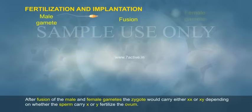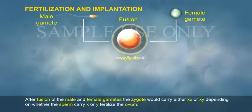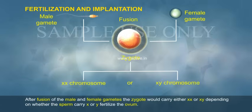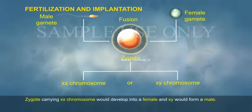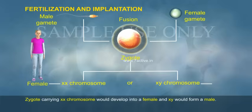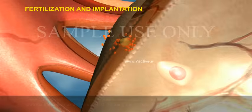After fusion of the male and female gametes, the zygote would carry either XX or XY depending on whether the sperm carrying X or Y fertilizes the ovum. A zygote carrying XX chromosomes would develop into a female, and XY would form a male.